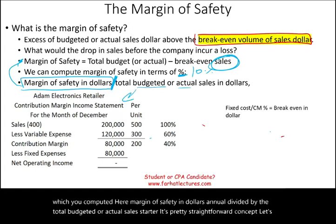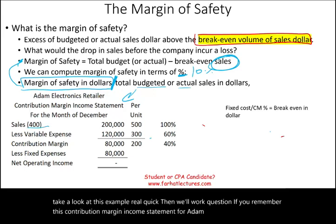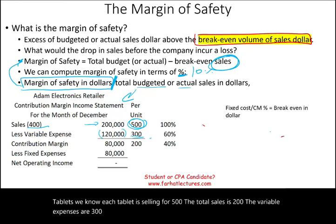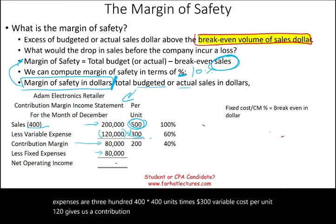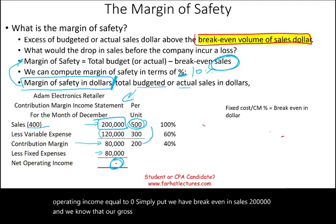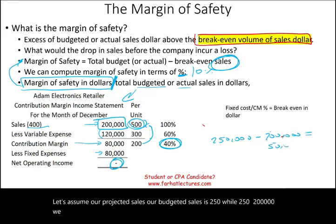Let's take a look at this example. If you remember this contribution margin income statement for Adam Company selling 400 tablets — at 400 tablets, each tablet is selling for $500, so total sales is $200,000. Variable expenses are 400 units times $300 variable cost per unit = $120,000, giving a contribution margin of $80,000. With fixed costs of $80,000, net operating income equals zero. So break-even in sales is $200,000, and the contribution margin percentage is 200 divided by 500 = 40%. Now let's assume our budgeted sales is $250,000. So $250,000 minus $200,000 — our margin of safety is $50,000.